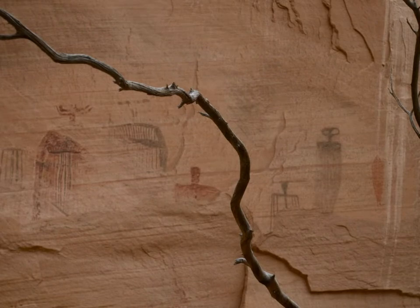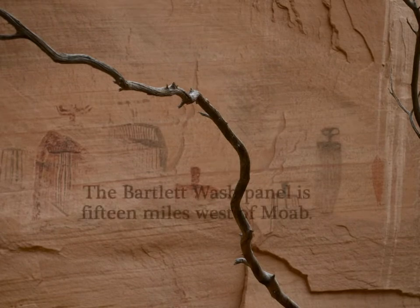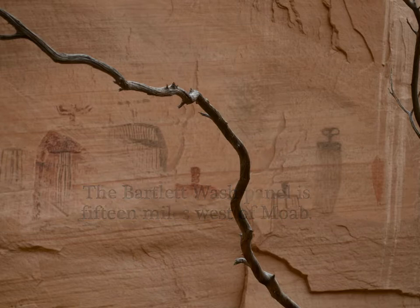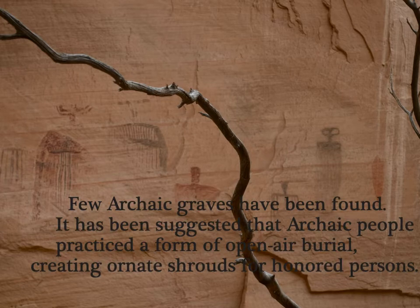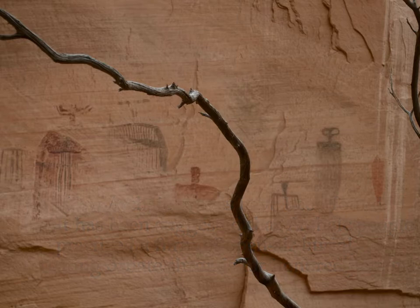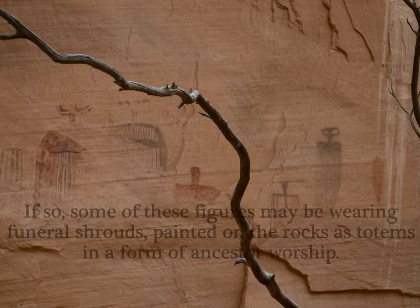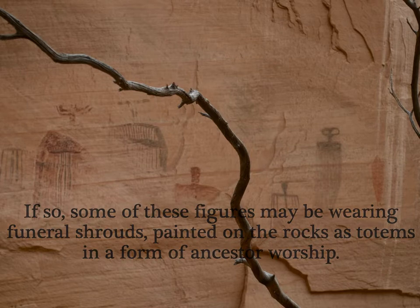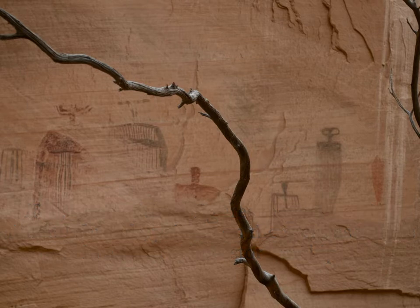The Bartlett Wash panel is about 15 miles west of Moab. You can see the wide staring eyes on the figure on the right, and on the left some very elaborate robes or shrouds. Few archaic graves have been found, and it has been suggested that archaic people practiced a form of open-air burial, creating ornamental shrouds for their honored dead. Some of these figures may be wearing those shrouds, which were then painted on the rocks as totems in a form of ancestor worship.